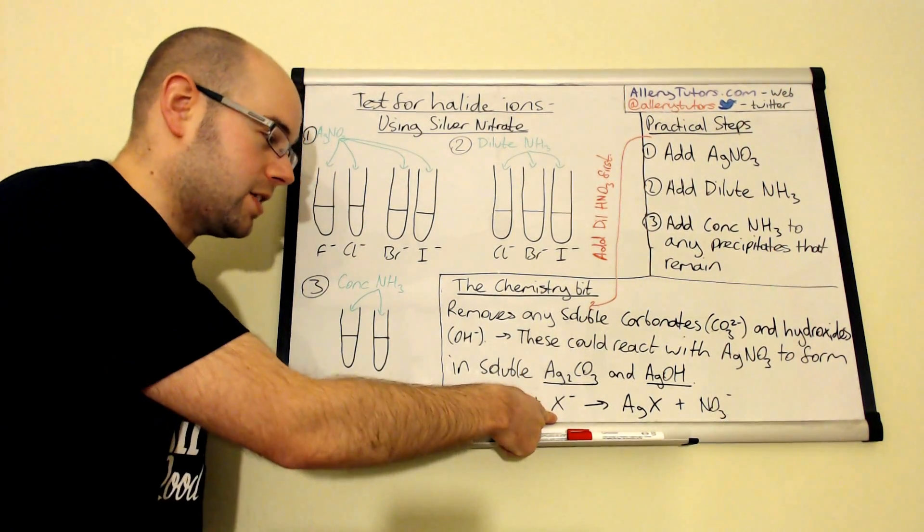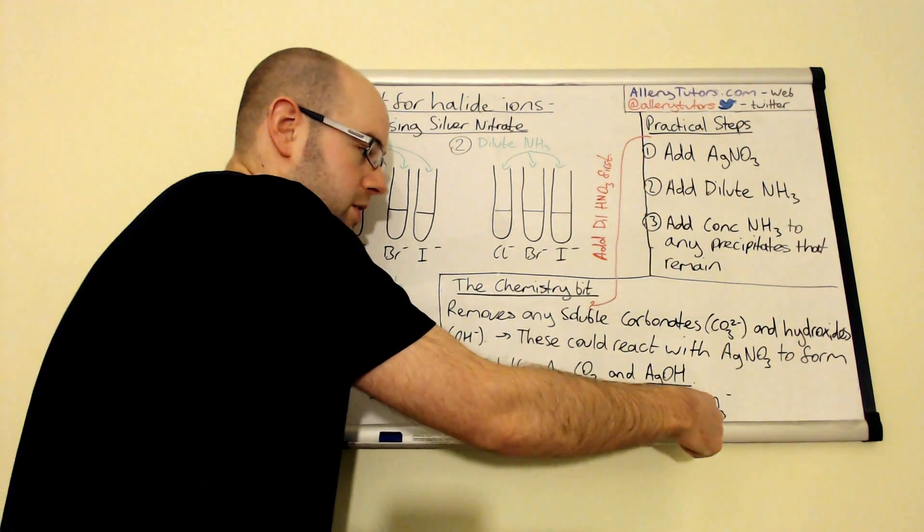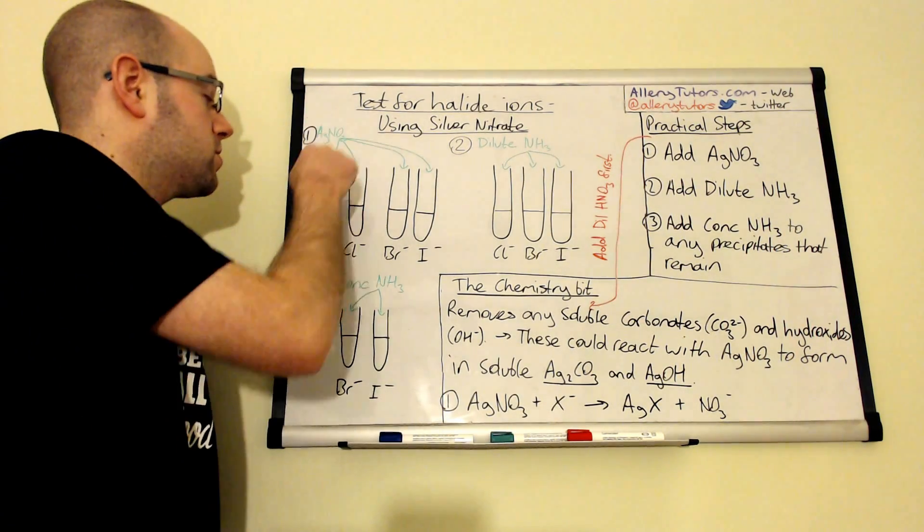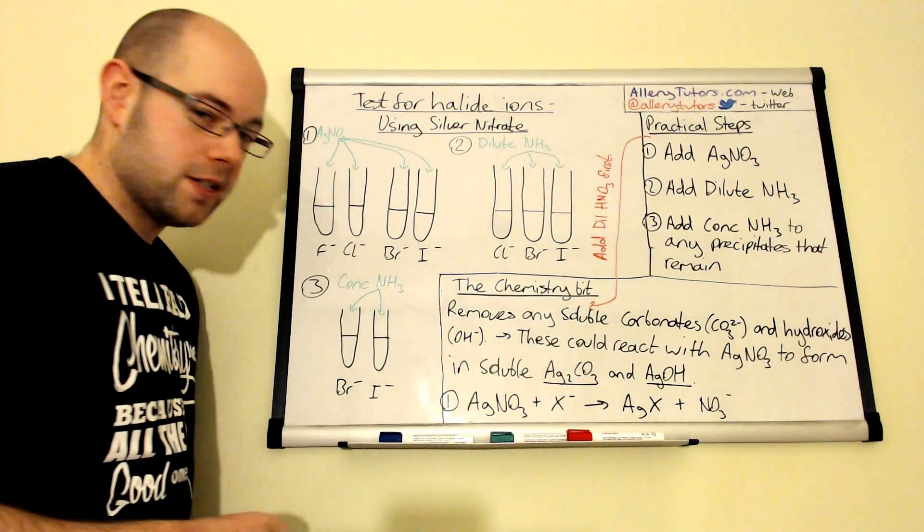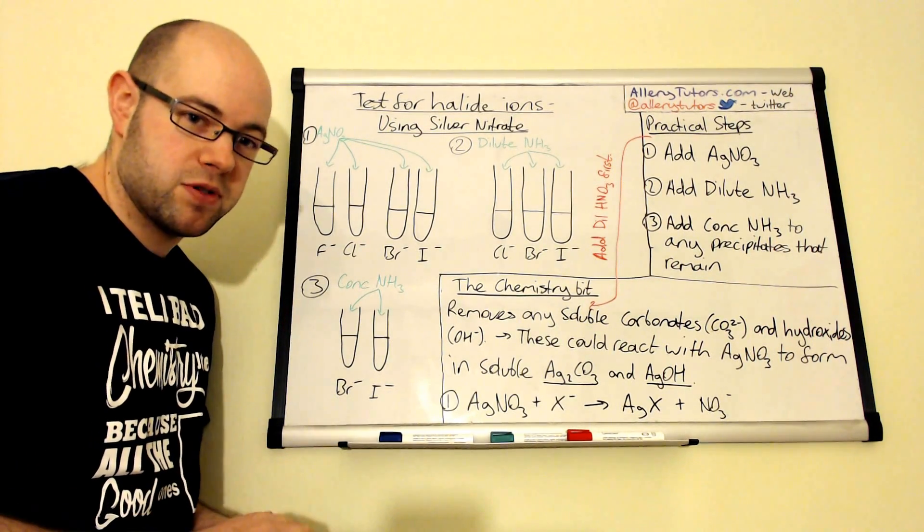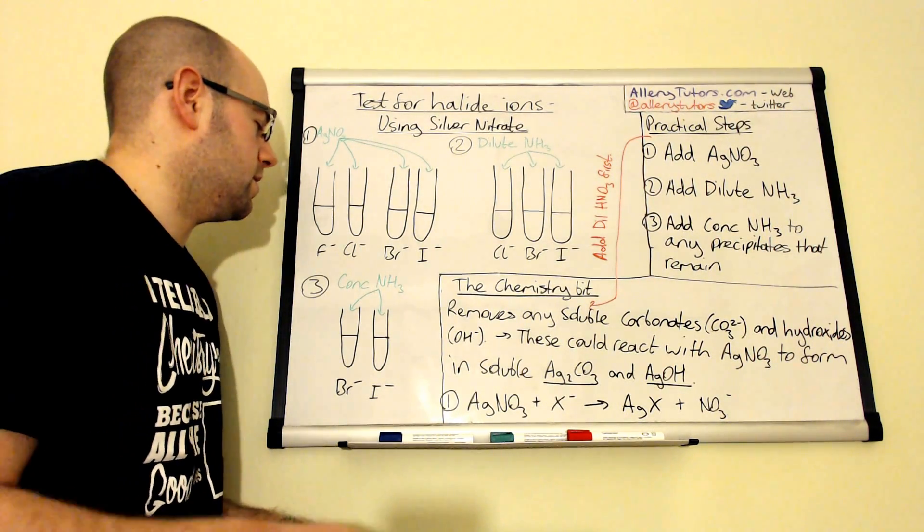Depending on what metal this halogen is bonded to will depend on what bonds with the nitrate ion over there. But in fact, we add silver nitrate to fluoride and we see nothing. It doesn't, nothing happens. We don't get any precipitate, nothing. We don't see anything.